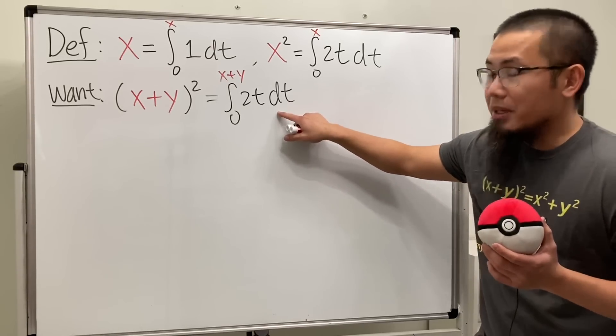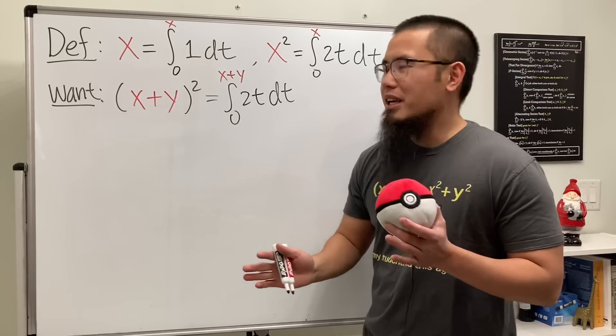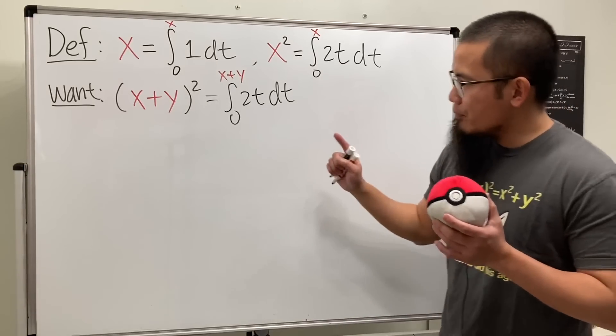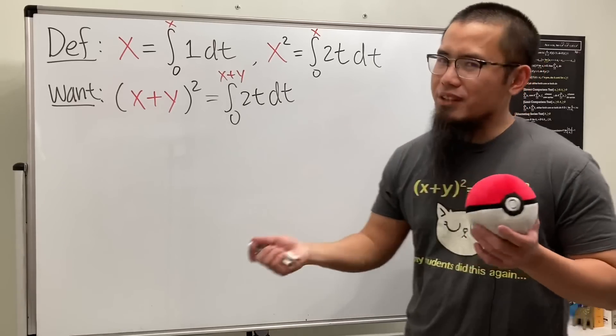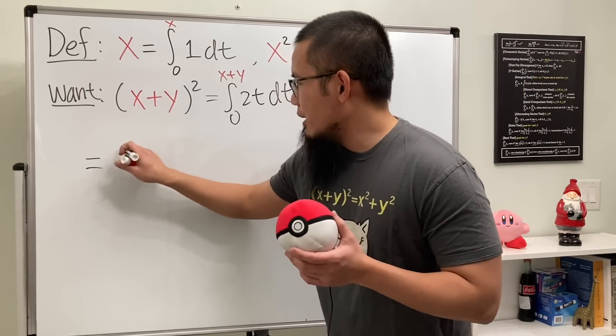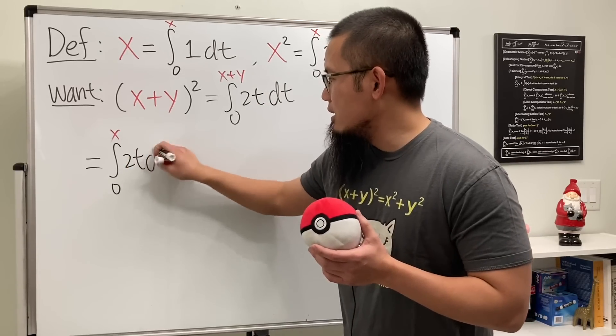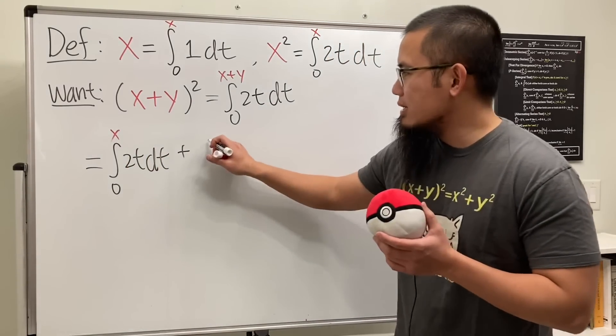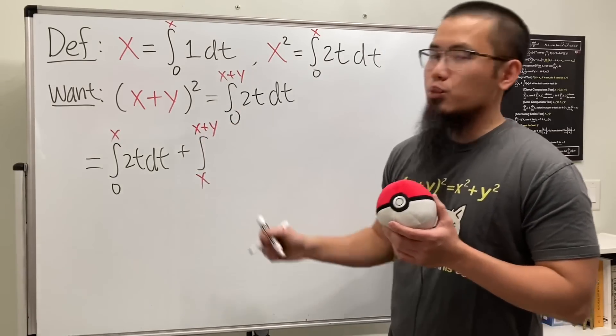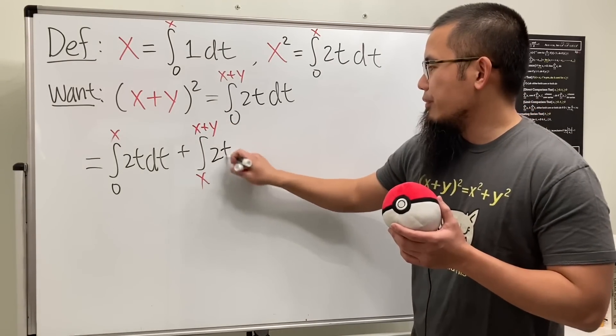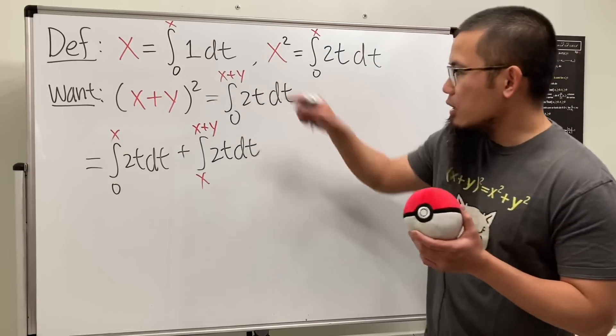So the way to legitimately continue is that we will have to use the property of integrals and maybe substitutions. So check this out. When we have the integral going from 0 to x+y, we can break this into two parts. So let's go ahead and just go from 0 to x, and then we have the 2t dt, and then I'm going to add it with the second part. We'll be going from x, and then we finish at x+y, 2t dt.